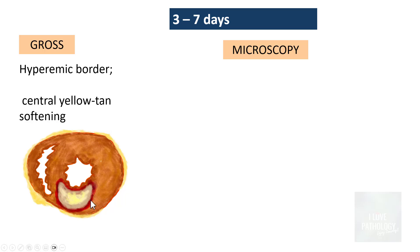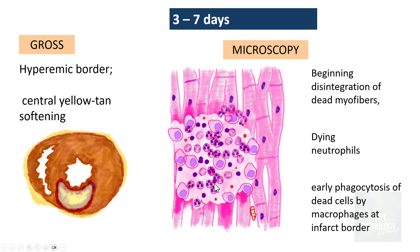From three to seven days, the border of the infarct area is hyperemic, the central area becomes more yellow tan and softens, and there is beginning disintegration of the dead myofibers. The neutrophils start dying once their function is over, and then macrophages appear and try to phagocytose the dead cells — both neutrophils and myocytes. This macrophage activity is most active at the border of the infarct.